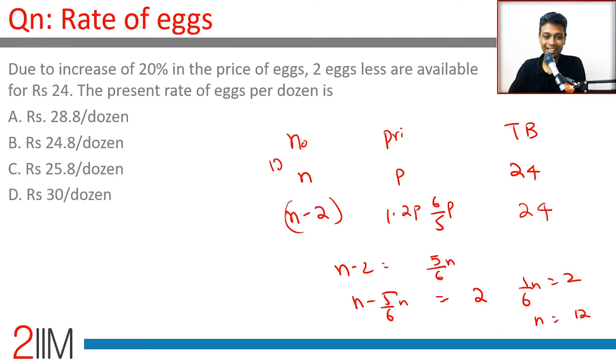You are buying a dozen eggs at 2 rupees per egg for 24 rupees, or you can buy 10 eggs at 2.4 per egg.